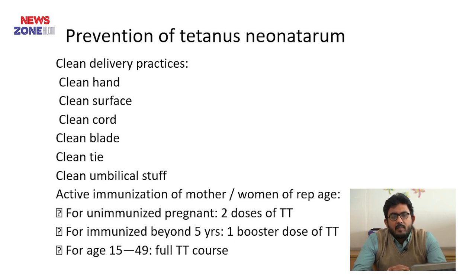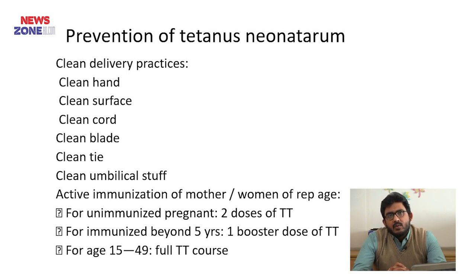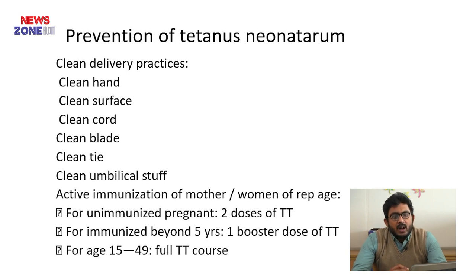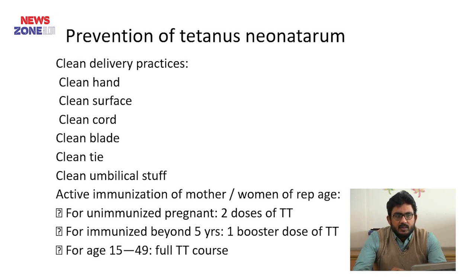Active immunization of mothers of reproductive age: for unimmunized pregnant women, 2 doses of tetanus toxoid can be given at 20 weeks and 24 to 28 weeks. For those immunized but more than 5 years ago, 1 booster dose of tetanus toxoid is given. For women aged 15 to 49 years, a full course of tetanus toxoid is administered.